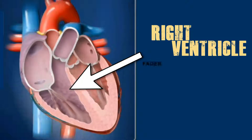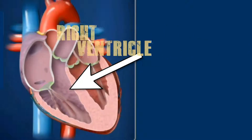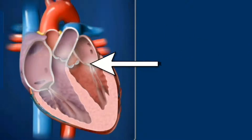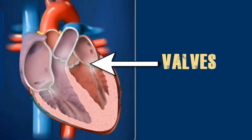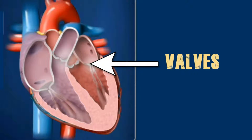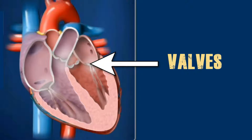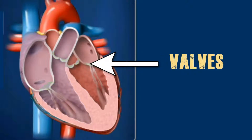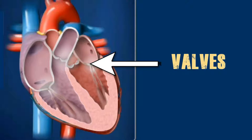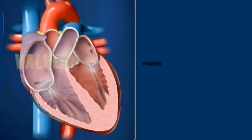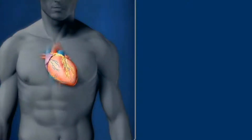Number five — valves: one-way biological gateways that make sure blood flows in the right direction through the heart's chambers and on to the rest of the body. Friends, you are now aware of how important the human heart is.